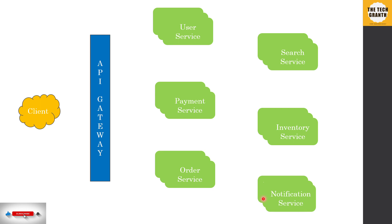If we have five instances of one service, ten instances of another, and five of another, what happens in that case? We need to go to the API gateway and configure each of these instances in it as well.